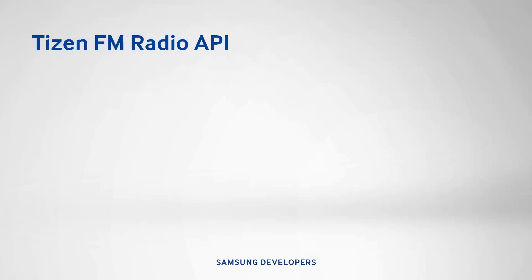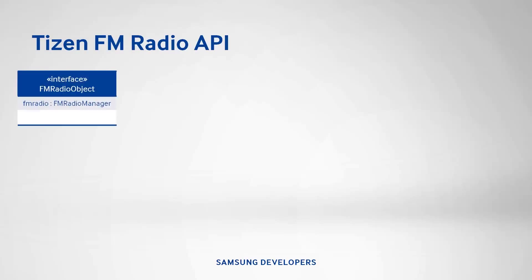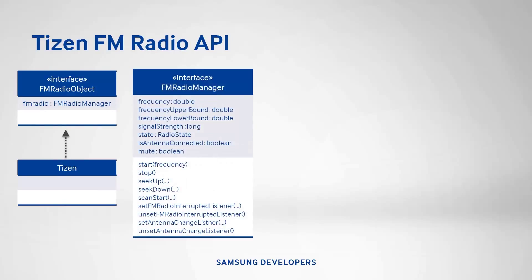Let's get a bit more technical. The FM radio object interface is implemented by Tizen. Inside the FM radio object is FM radio of typed FM radio manager. The FM radio manager holds the bulk of all properties and methods of the FM radio API. This is where you'll find all the functions we saw in the radio states like start, stop, seek up, seek down, and many more.